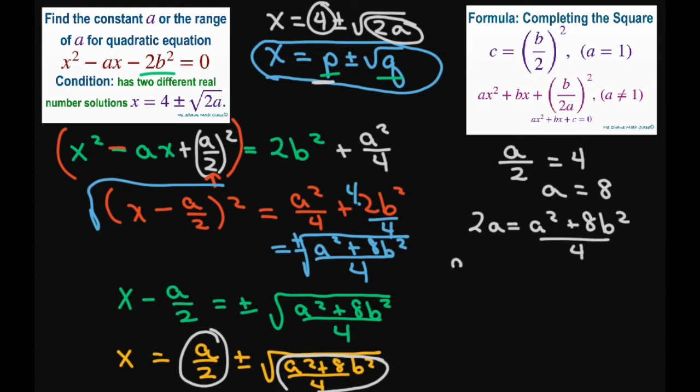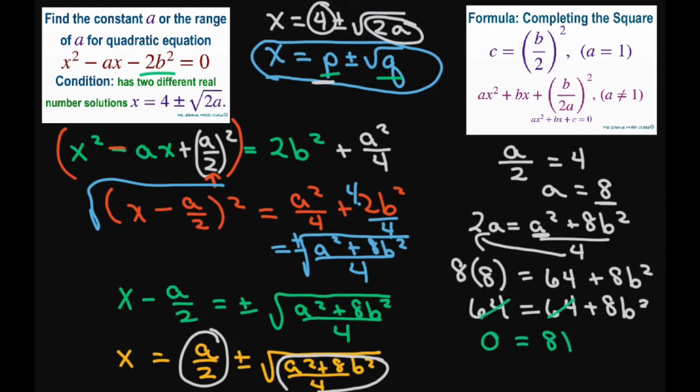So basically we have 8A, which you cross multiply, equals A squared plus 8b squared. So when we substitute A equals 8, we get 64 equals 64 plus 8b squared. Remember this 4 is gone because I crossed it up here. Now when you subtract these two, you're just going to get 0 equals 8b squared. Therefore your B is just going to equal 0.